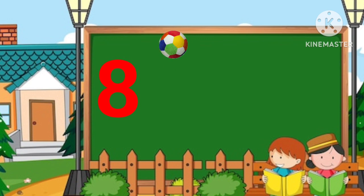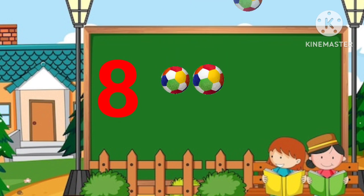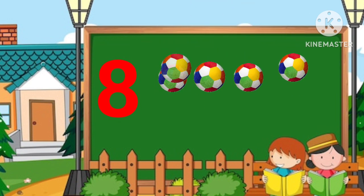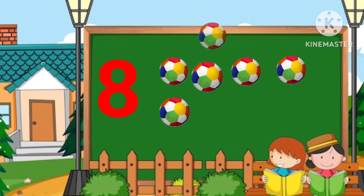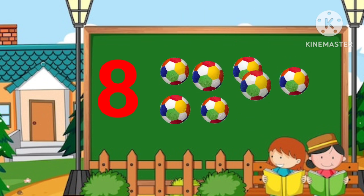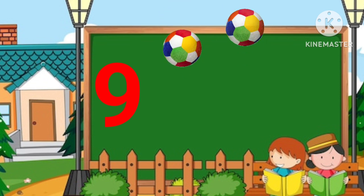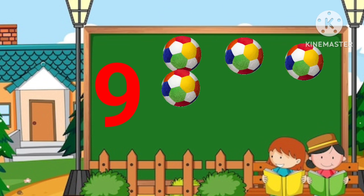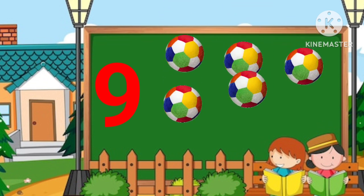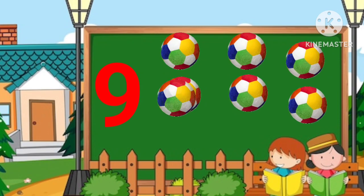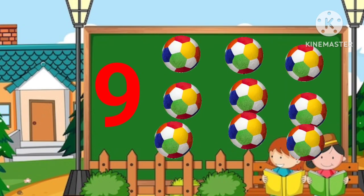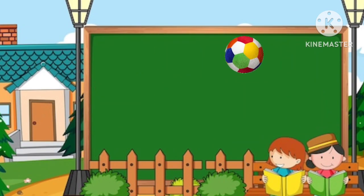Seven, eight. One, two, three, four, five, six, seven, eight. Nine, one, two, three, four, five, six, seven, eight, nine.